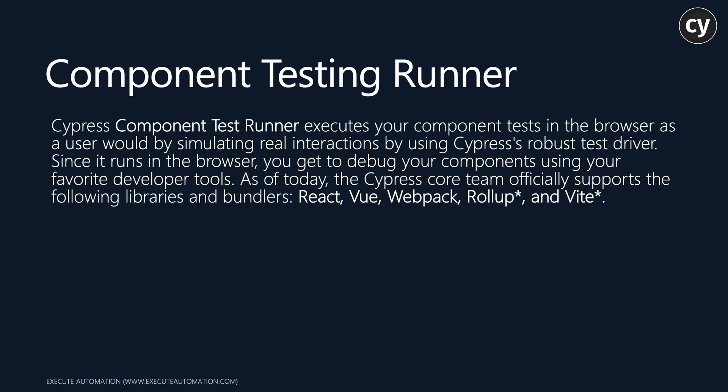The Cypress component test runner executes your component tests in a browser as a user would, simulating real interactions using Cypress's robust test driver. Since it runs in a browser, you can debug your components using your favorite developer tools. As of today, the Cypress core team officially supports the following libraries and bundlers: React, Vue, Webpack, Rollup, and Vite. In the future there will likely be more bundlers and libraries supported.